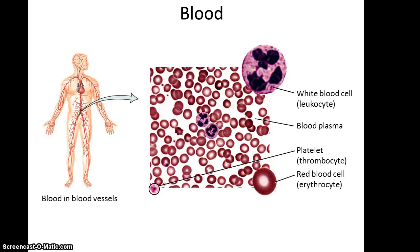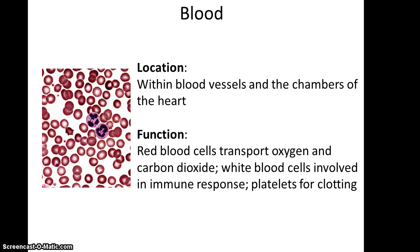Finally, the liquid connective tissue we'll look at is blood. Blood has blood plasma, which is a fluid, and within that fluid you find red blood cells known as erythrocytes, platelets known as thrombocytes, and white blood cells known as leukocytes. They are located within blood vessels and within the chambers of the heart. Their functions include transporting oxygen and carbon dioxide, immune response, and clotting to prevent excess blood loss when injured. And that is it for the connective tissues.